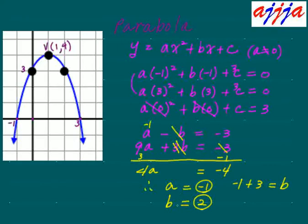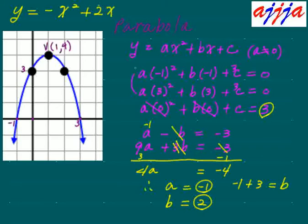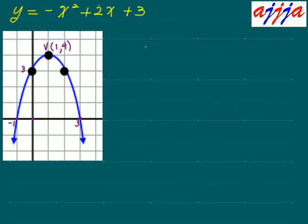Now you have a, b, and c. c was 3. All we have to do is plug them in. This equation is y equals — a is negative 1 — so negative x squared. b is 2, so plus 2x. c is 3, so plus 3. That's it!